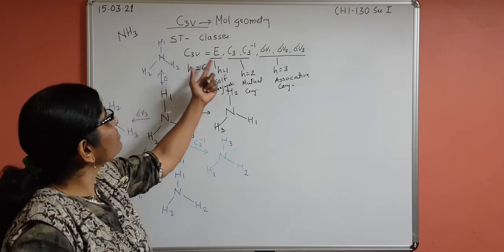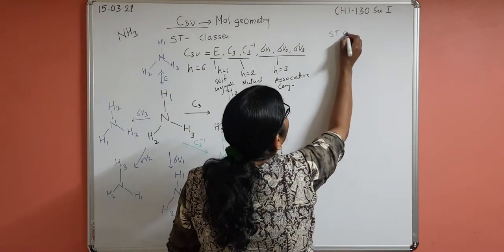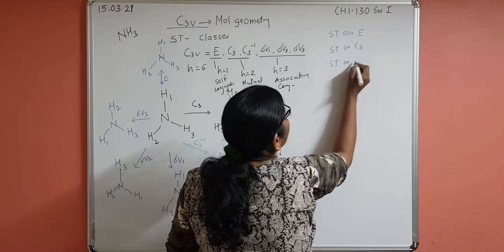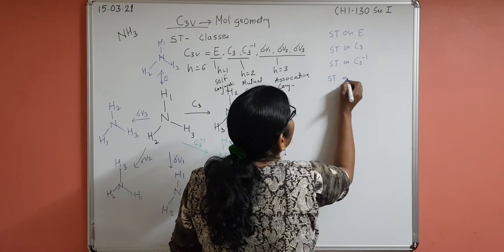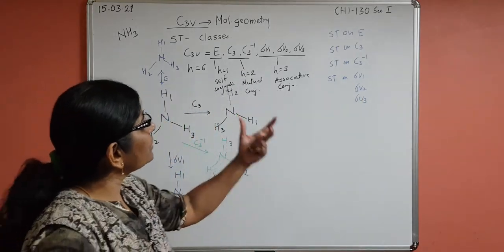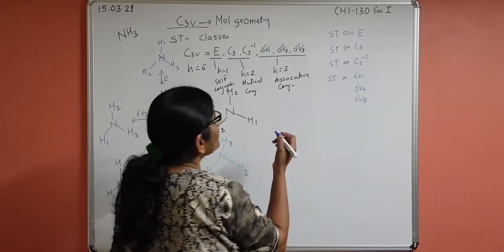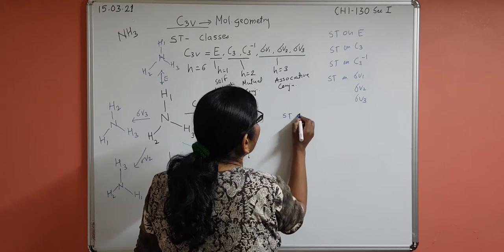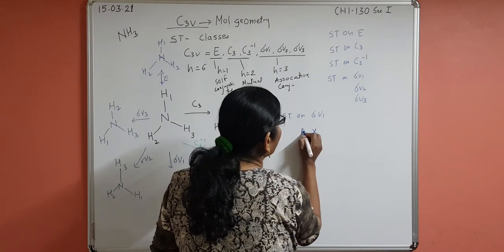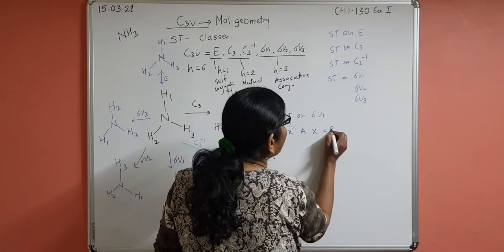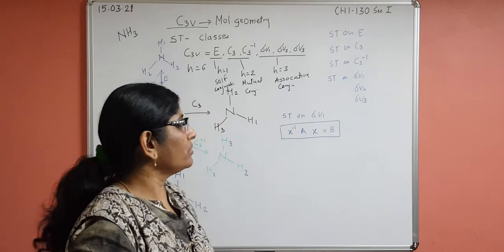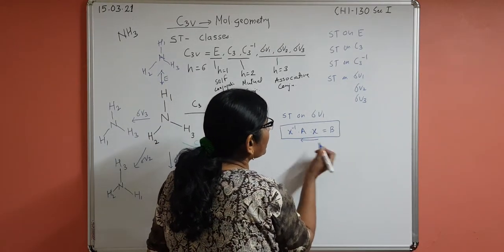Now we perform similarity transformation one by one. We need to do it on: identity, C3, C3 inverse, σV1, σV2, and σV3. The standard equation for similarity transformation is: X · A · X⁻¹ = B, where you perform consecutive product of three operations, starting from the right — first X and A, then multiply by X⁻¹ to get B.